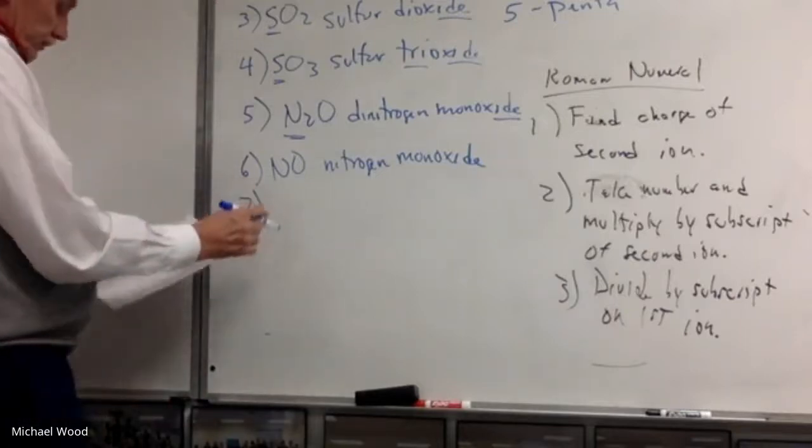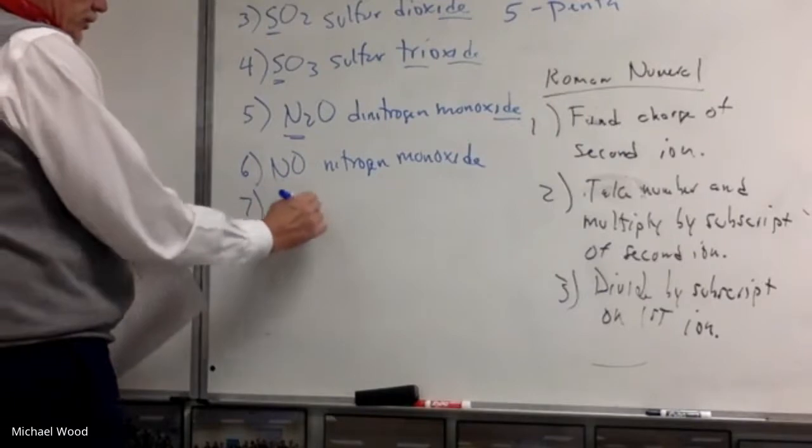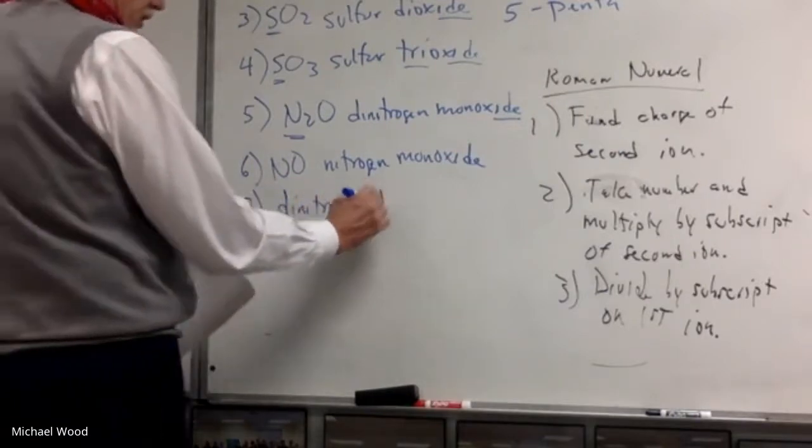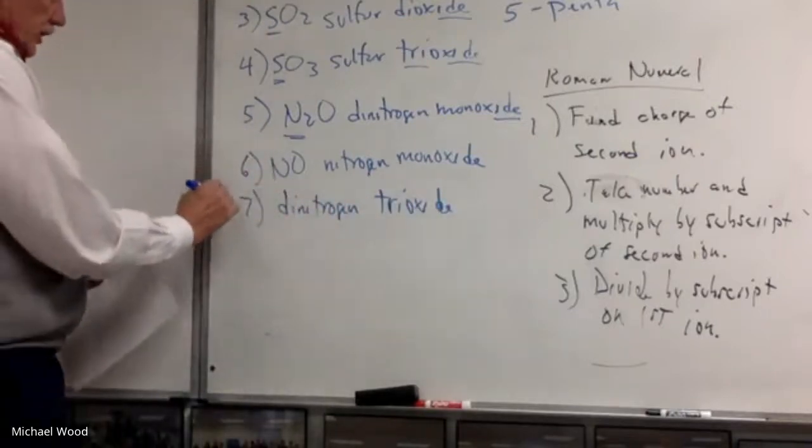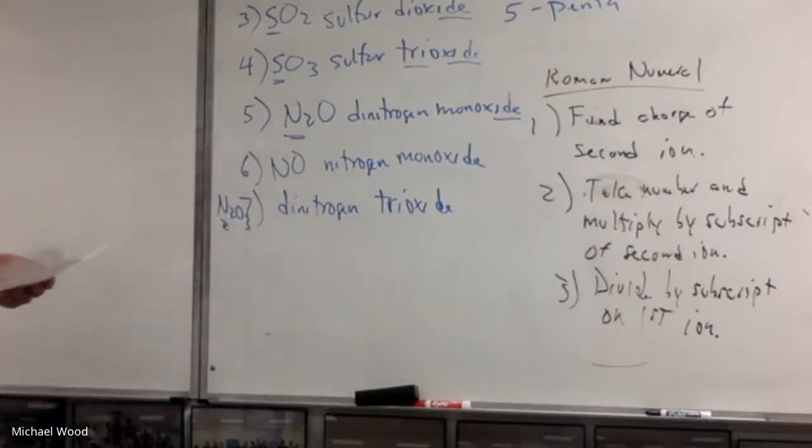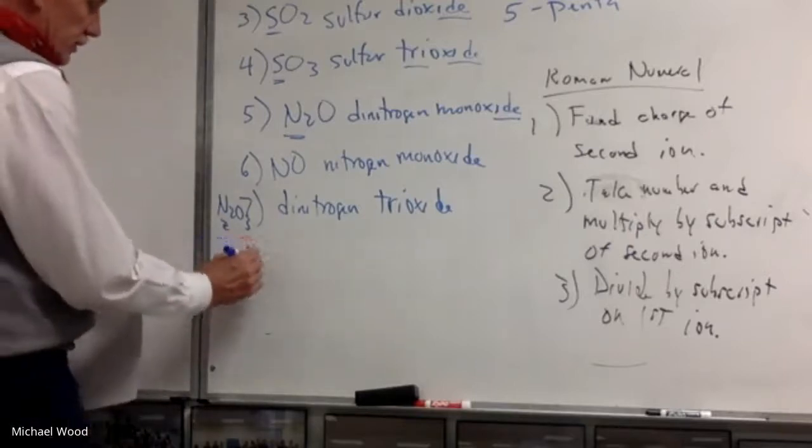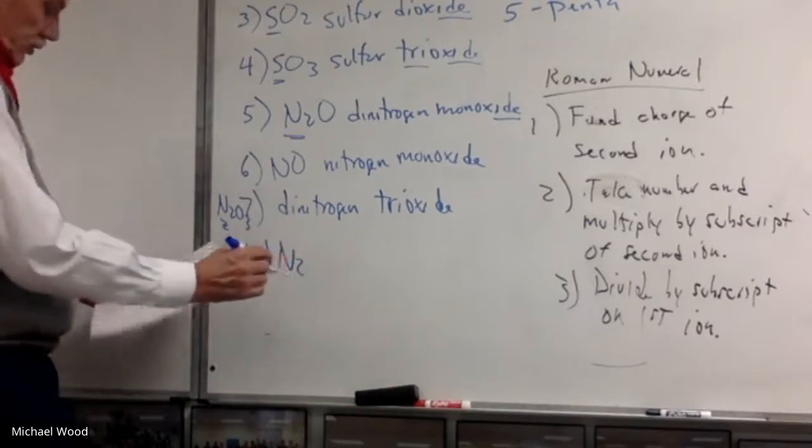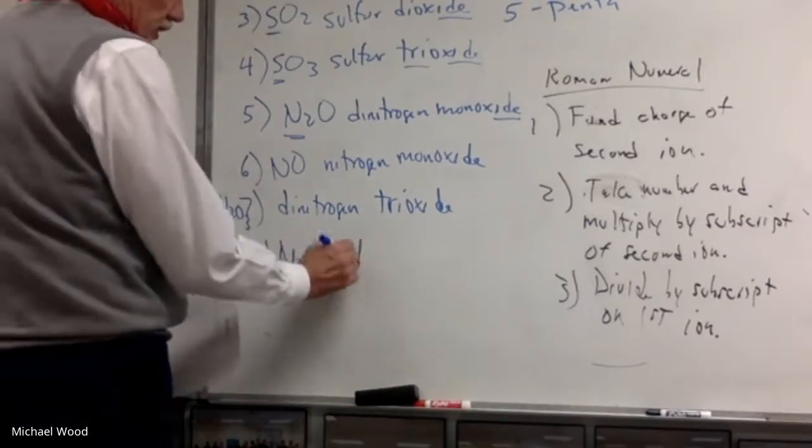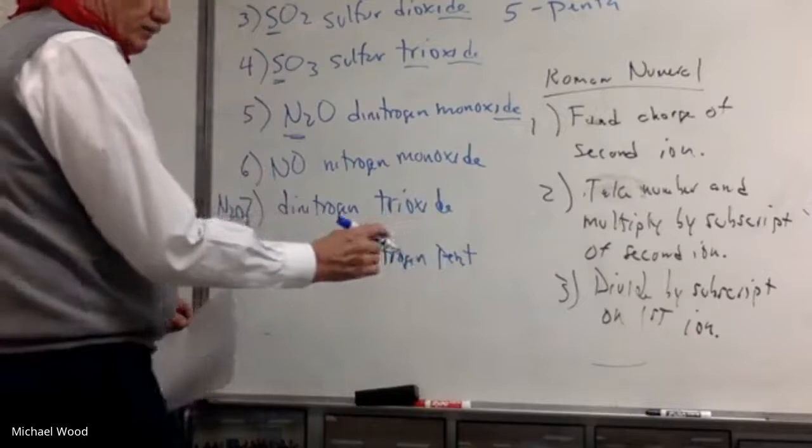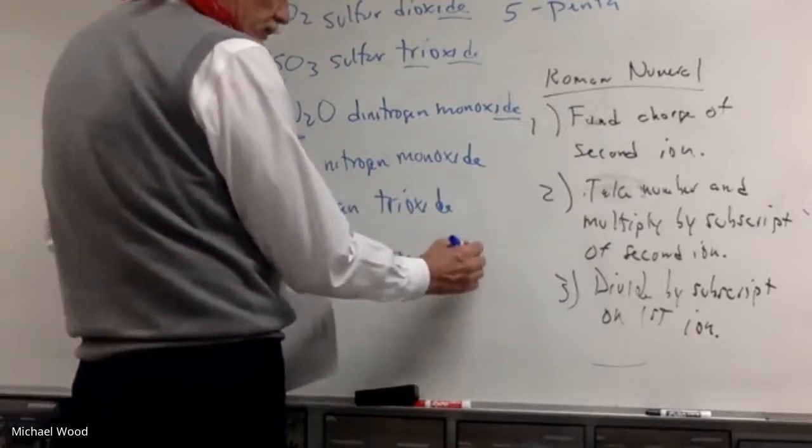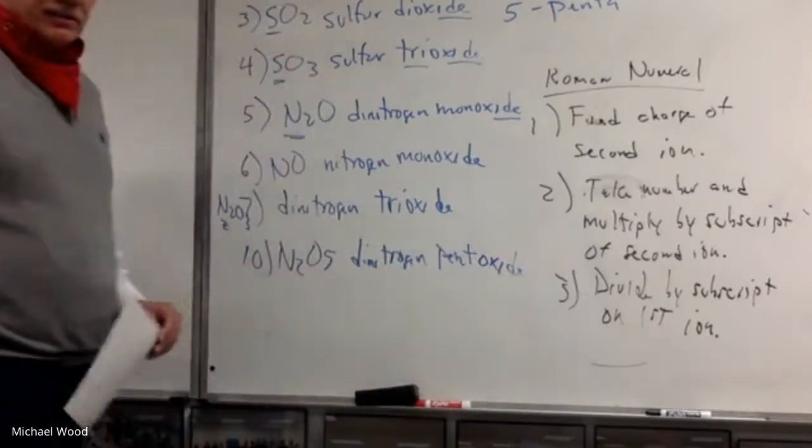Number 7, dinitrogen trioxide. Again, it's N2O3. The first thing I do is I look up the first element in the formula. Skipping down a little bit, number 10, N2O5, so dinitrogen, 5 is penta. And if I have a vowel like penta or tetra, I always drop the vowel here, so pentoxide.